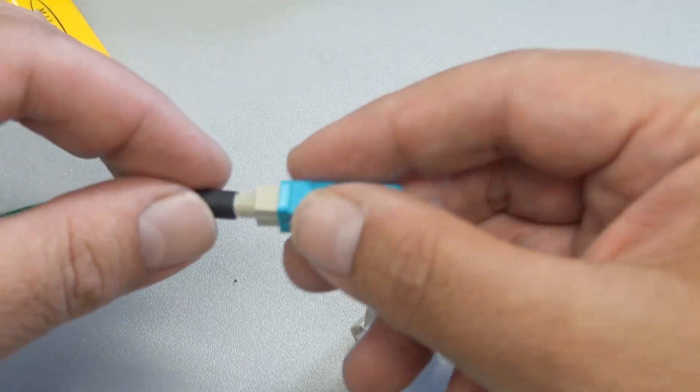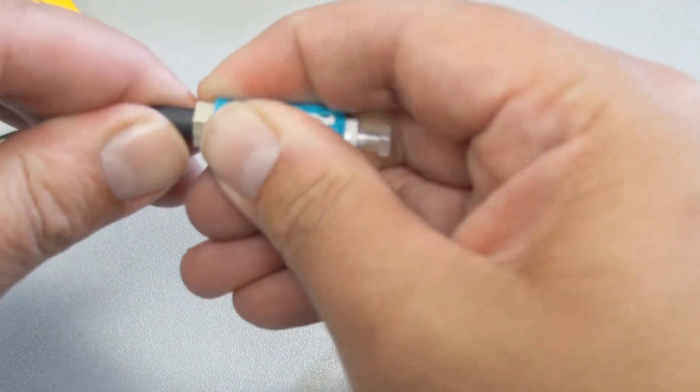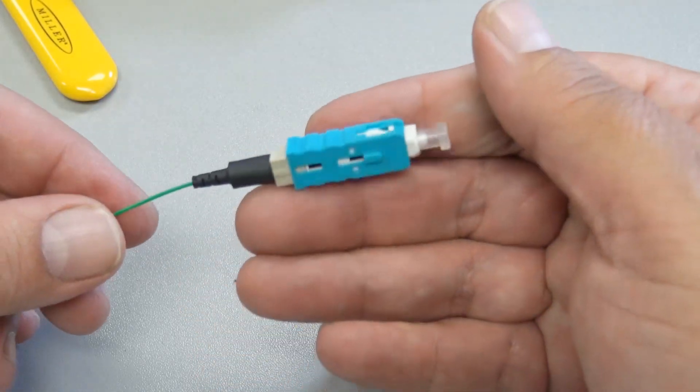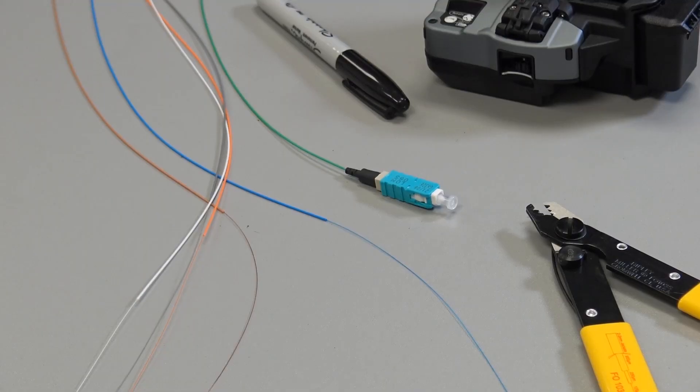Forgot to put the boot on. There you go. And there you go, piece of cake. Go ahead and just repeat that process for the rest of the strands, and you're good to rock and roll.